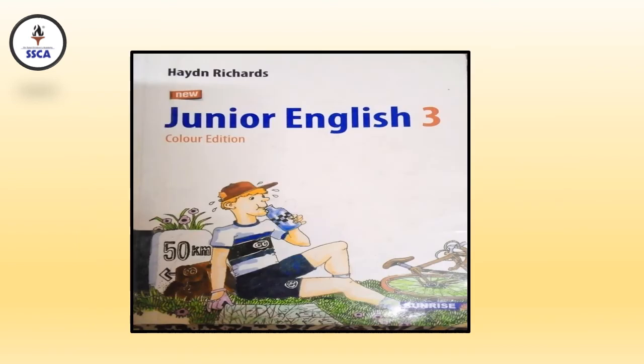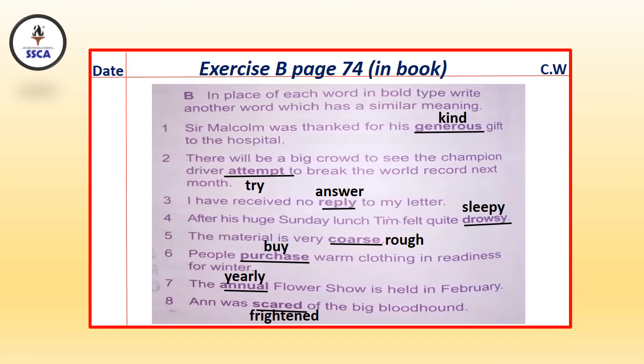Let's move forward to our book work. Students, open book page number 74 and mention today's date and see work. Now you are on page 74 and Exercise B. In place of each word in bold type, write another word which has a similar meaning. You have some words in sentences and you have to underline them as shown and write similar words for them.